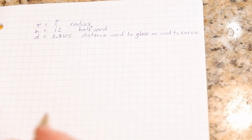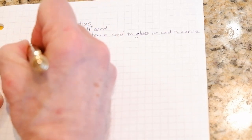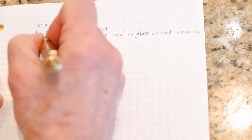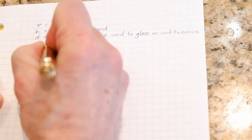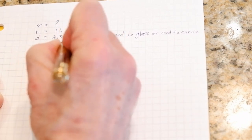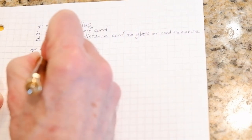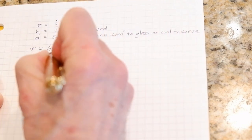So the relationship, the equation that's going to give us the radius, is this: the radius is equal to the square of the half chord plus the square of the distance from the chord, and all of that is divided by twice the distance.